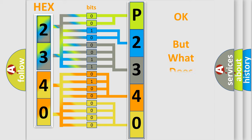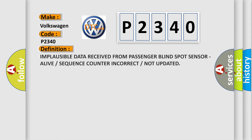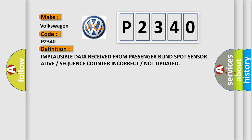We now know how the diagnostic tool translates received information into a more comprehensible format. The number itself does not make sense to us if we cannot assign information about what it actually expresses. So, what does the diagnostic trouble code P2340 interpret specifically for Volkswagen car manufacturers? The basic definition is: implausible data received from passenger blind spot sensor, alive or sequence counter incorrect or not updated.